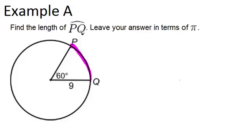So what we know is that the central angle is 60 degrees and our radius is 9 units. To find the arc length, first find the circumference and then multiply by the fraction of the circle that the arc is.